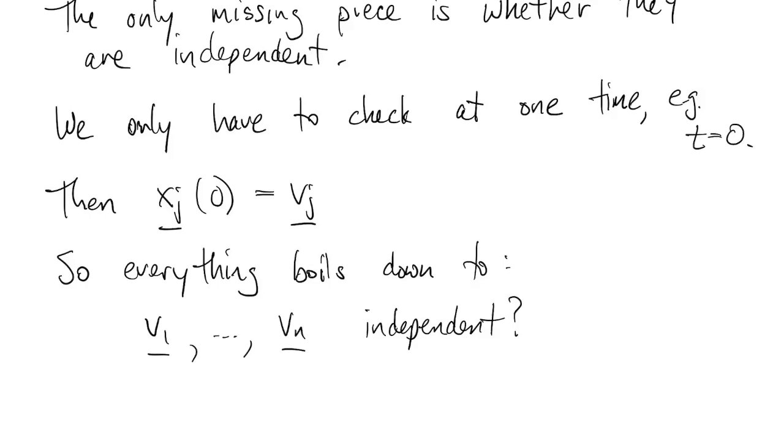Either this is possible or it isn't. If it's impossible for some particular matrix, we say that matrix is defective. Kind of a harsh word, but that's the term.